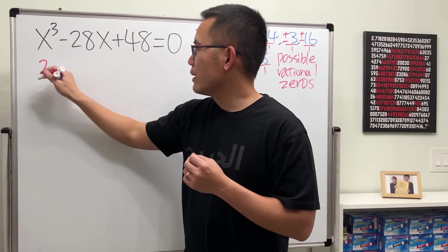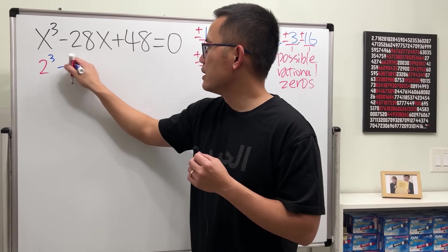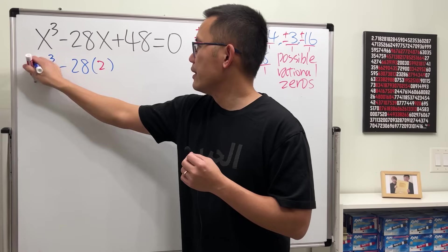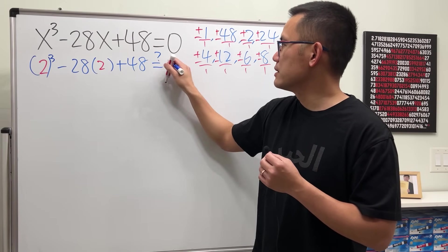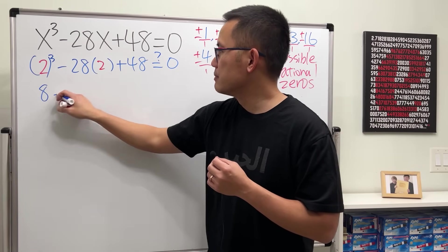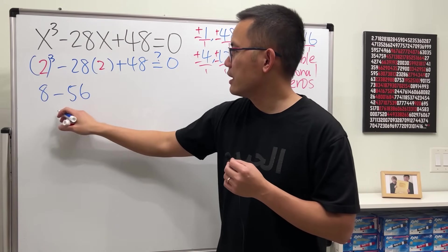I'm going to plug in two in here, so we are looking at two cubed minus 28 times two and then plus 48. Is this going to give us zero? Well, this is eight and this is minus 56.